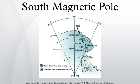As of 2005 it was calculated to be located at 79.74 degrees S, 108.22 degrees E, near the Vostok station.